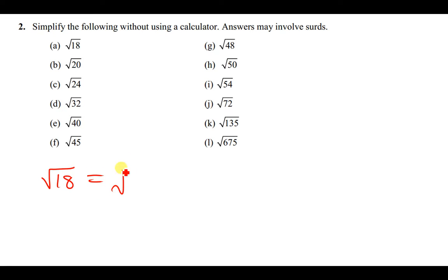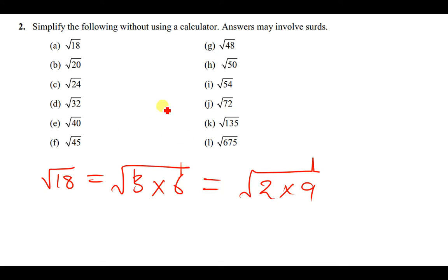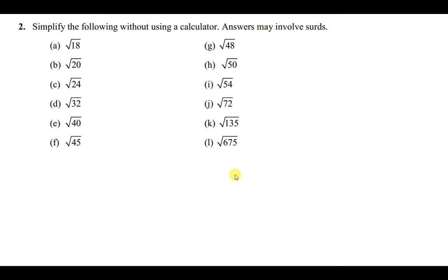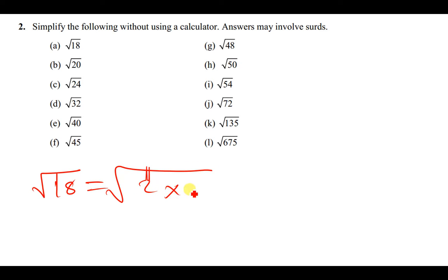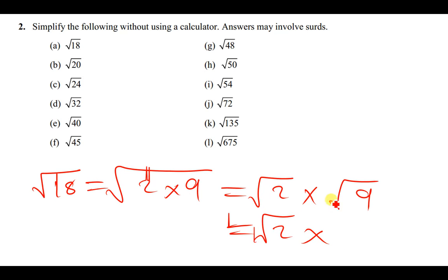The square root of 18 can also be written as the square root of 3 times 6, or the square root of 2 times 9. We're going to use 2 times 9. So the square root of 2 times 9 can also be written as the square root of 2 times the square root of 9. The square root of 9 is 3, so the answer will therefore be 3√2.